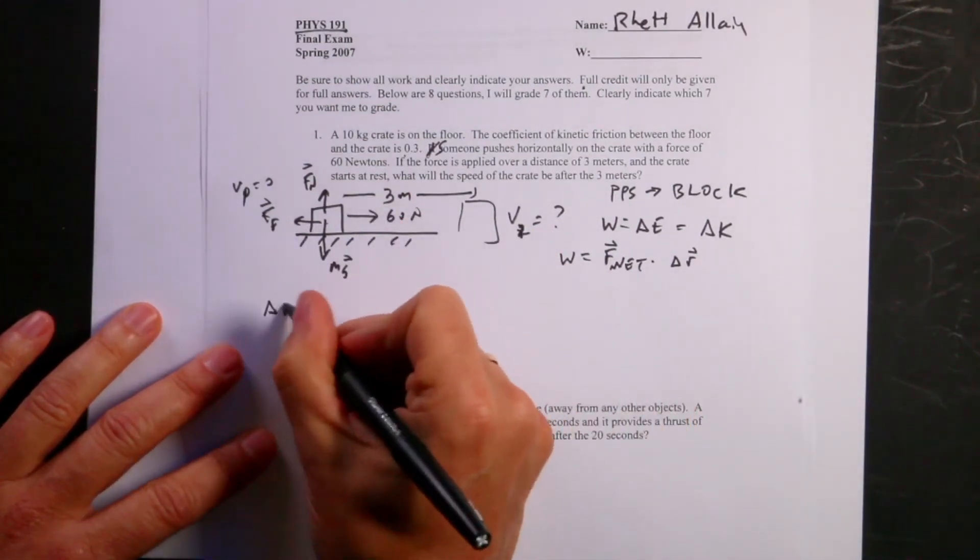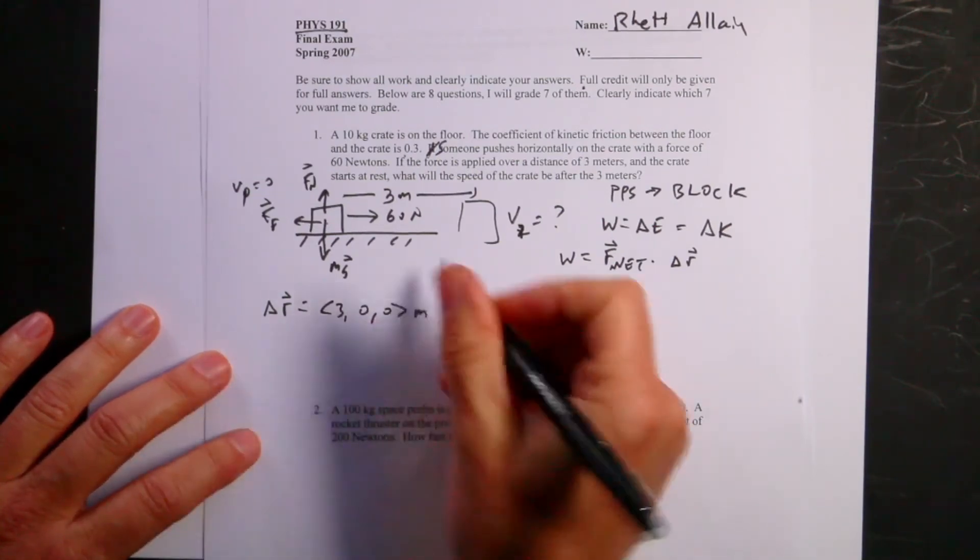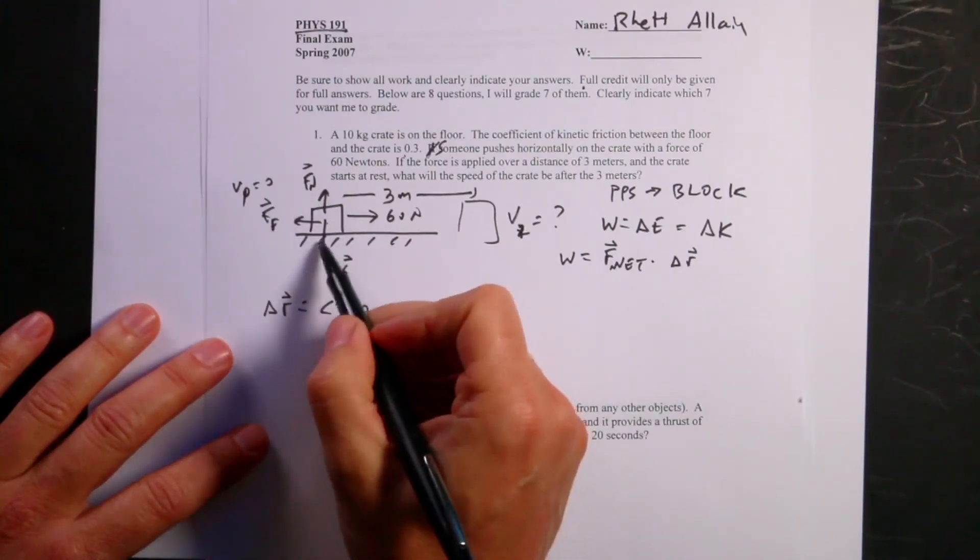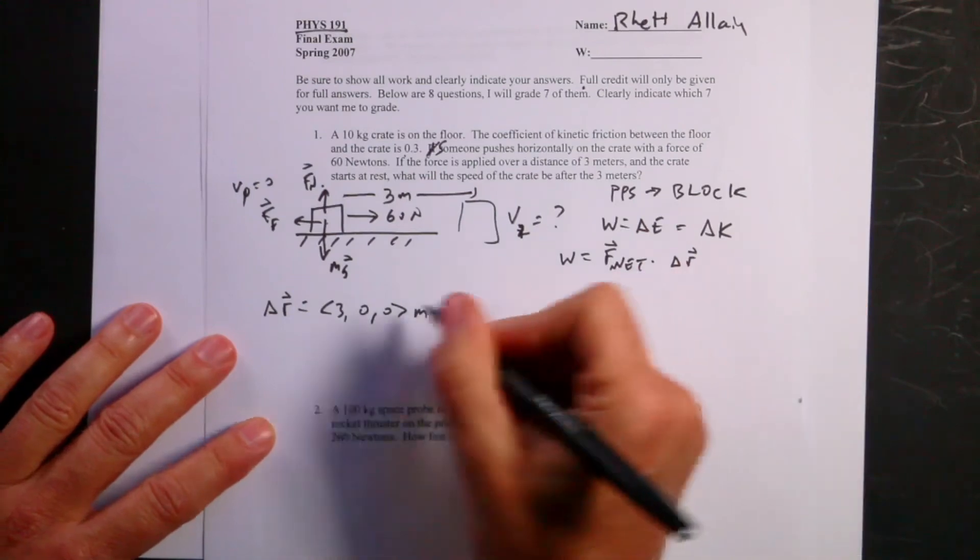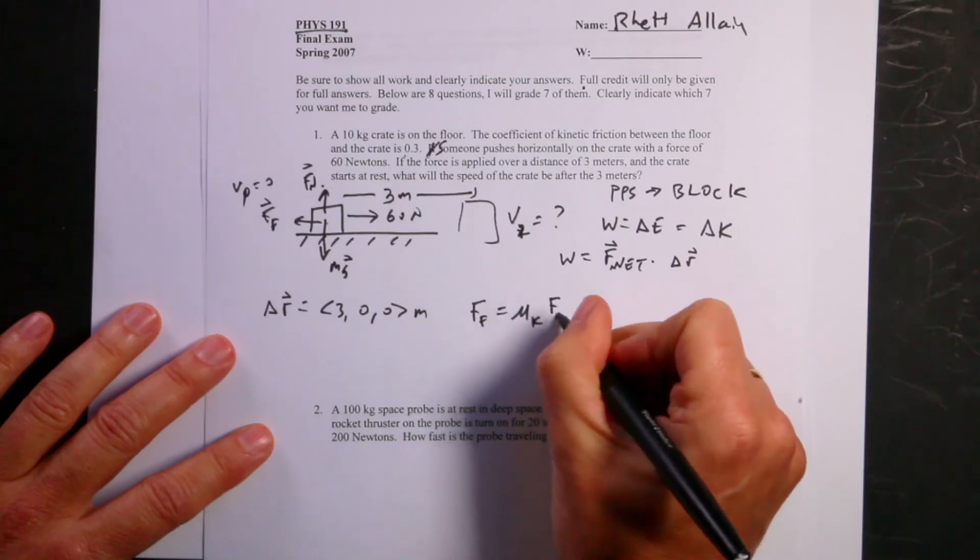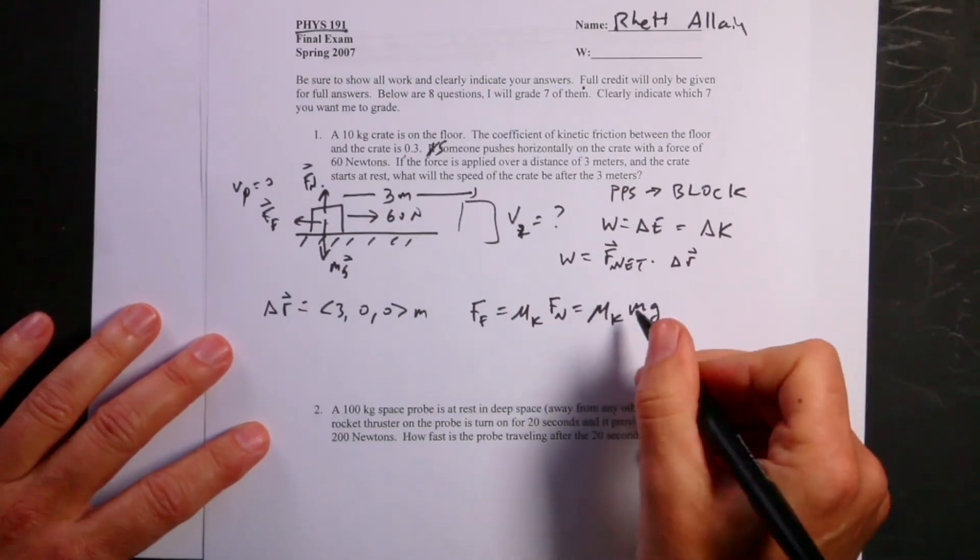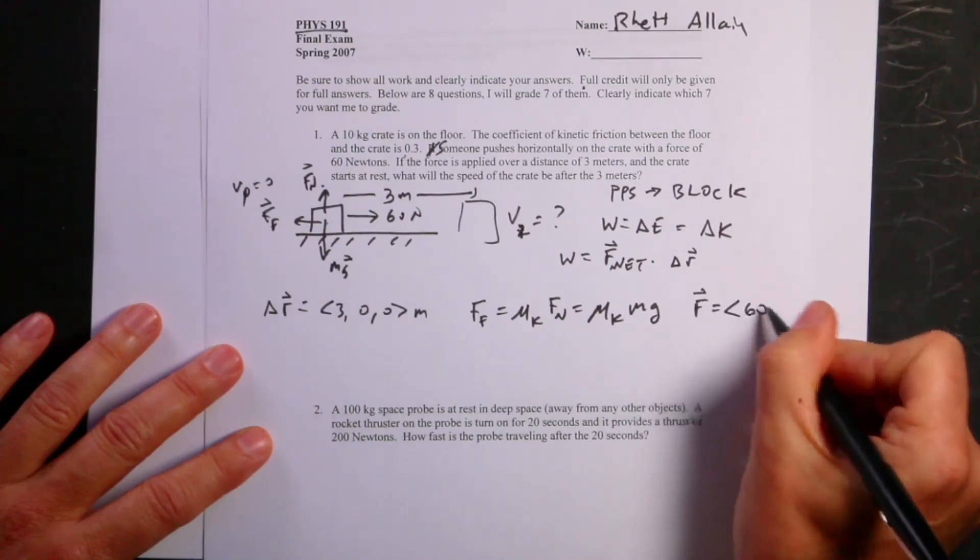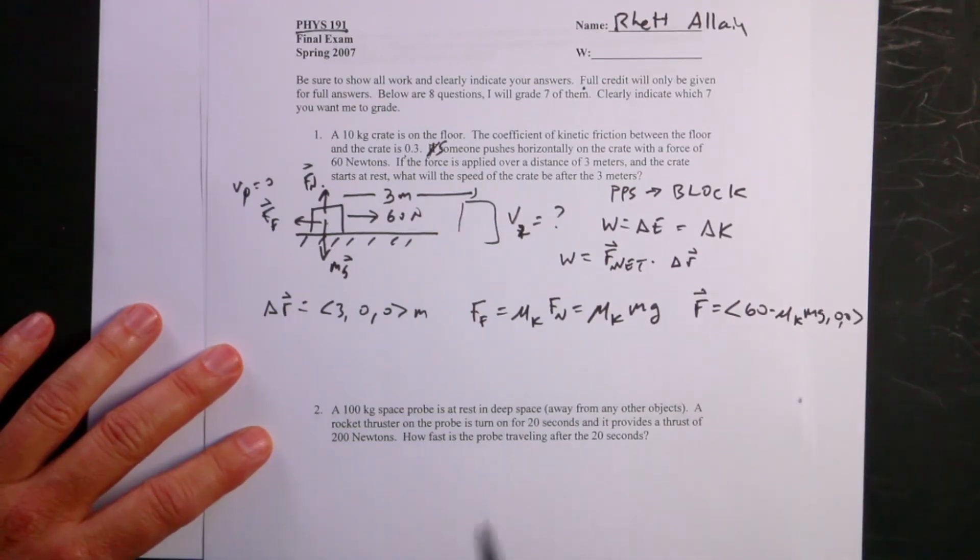The displacement, let's write this out as a vector. Delta r is the vector (3, 0, 0) meters. The net force, since it doesn't accelerate up or down, the gravitational force is equal to the normal force. The frictional force is equal to the coefficient of friction times the normal force, which is mu_k times mg. So the net force is going to be equal to the vector (60 minus mu_k mg, 0, 0).